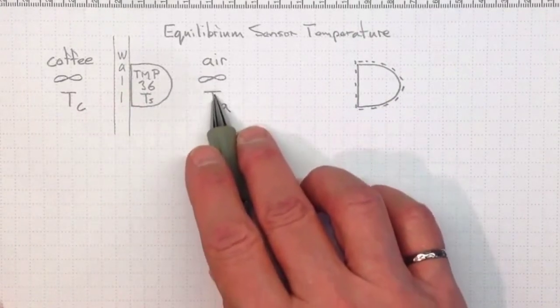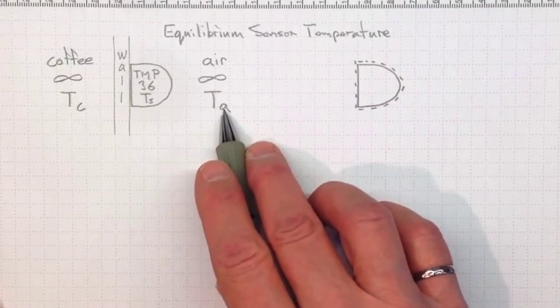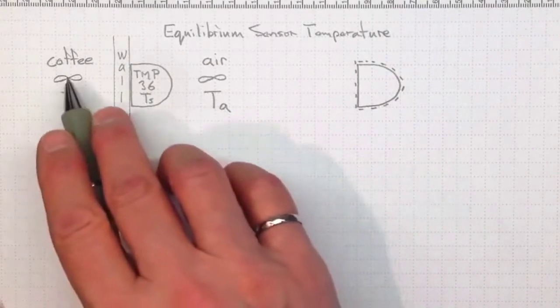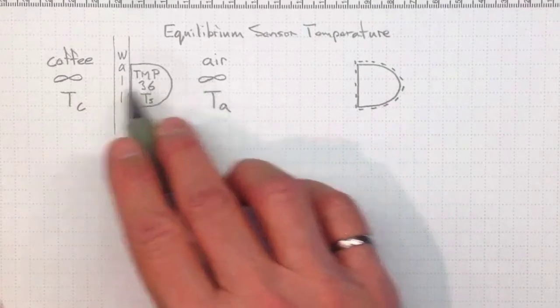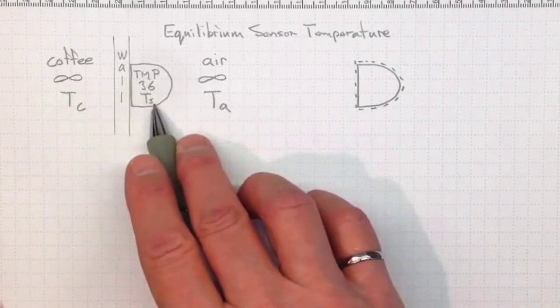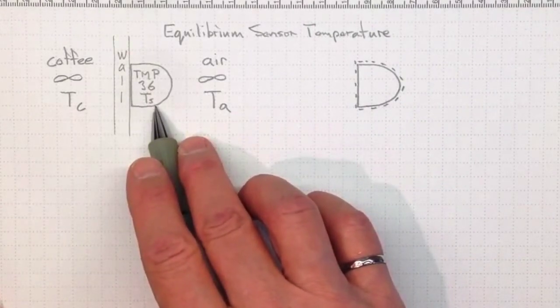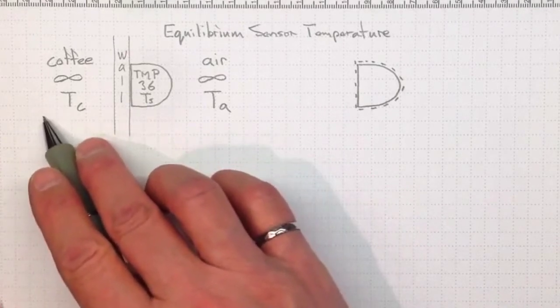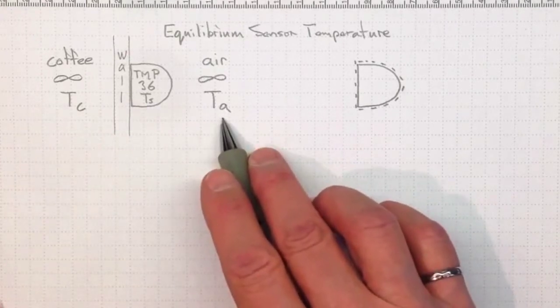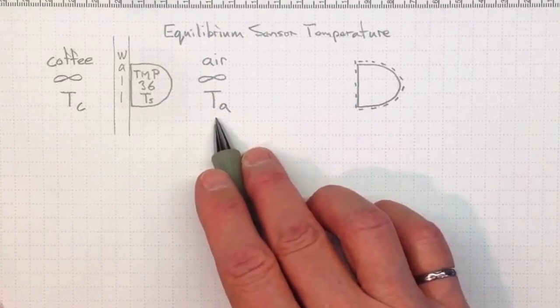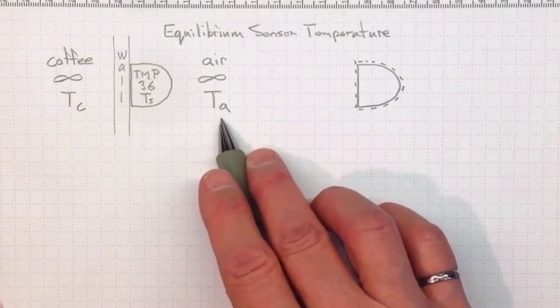And air on the other side at temperature T_air or T_ambient. Now we're going to pretend that both of these are really big things compared to the sensor, which is not a terribly bad approximation. So this will act like a thermal energy reservoir and the air will also act like a thermal energy reservoir, as you did in thermodynamics.